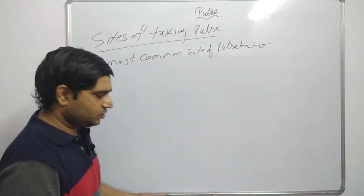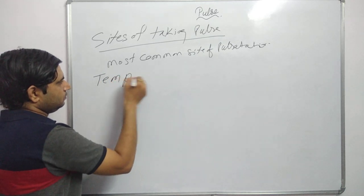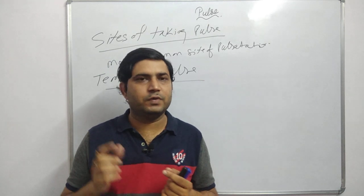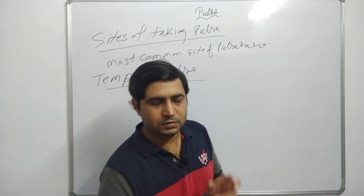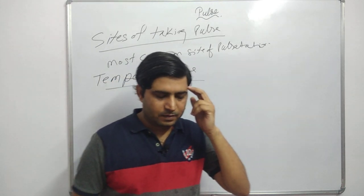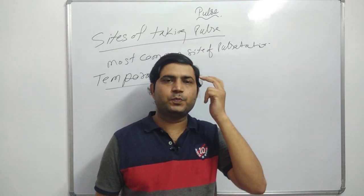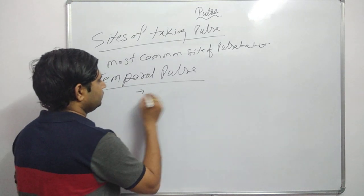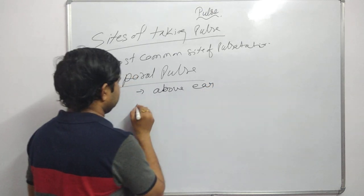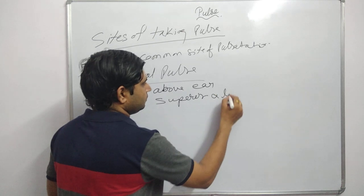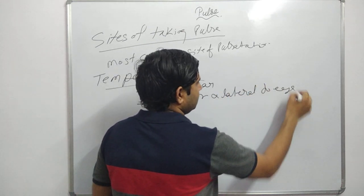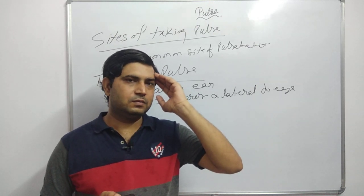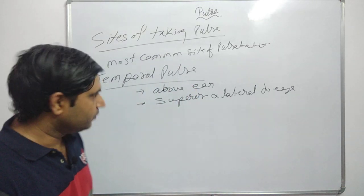Next is the temporal pulse. The temporal pulse is related to the temporal bone. We check the pulse from the temporal region, which is above the ear and lateral and superior to the eyes. So this part is superior to the eyes and lateral to the eyes.